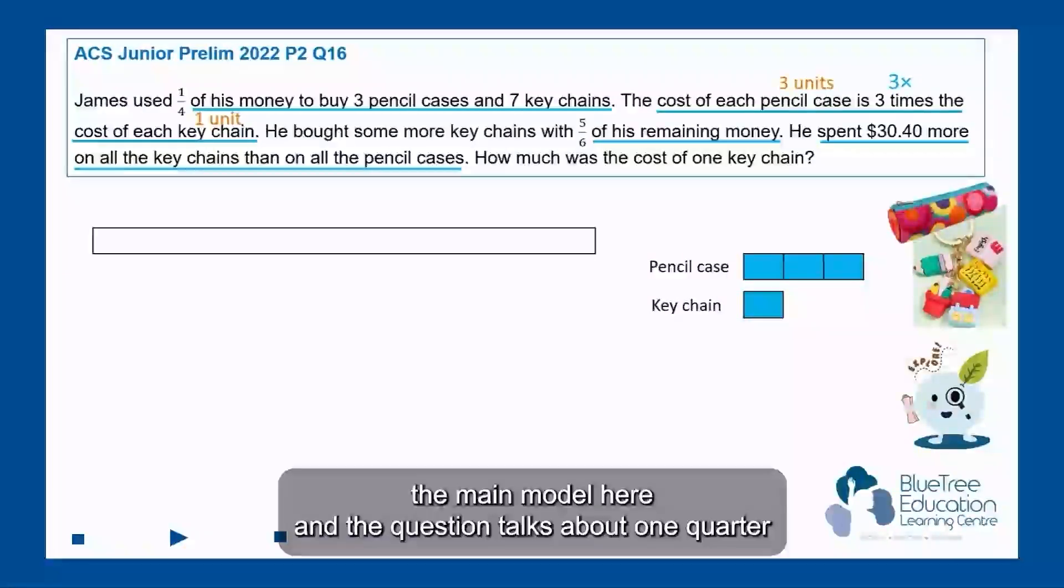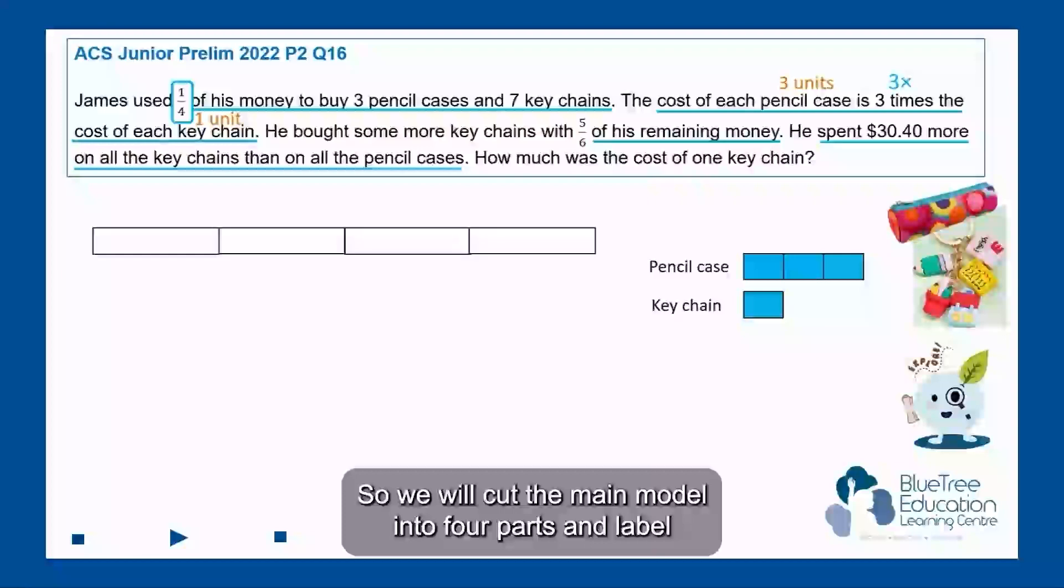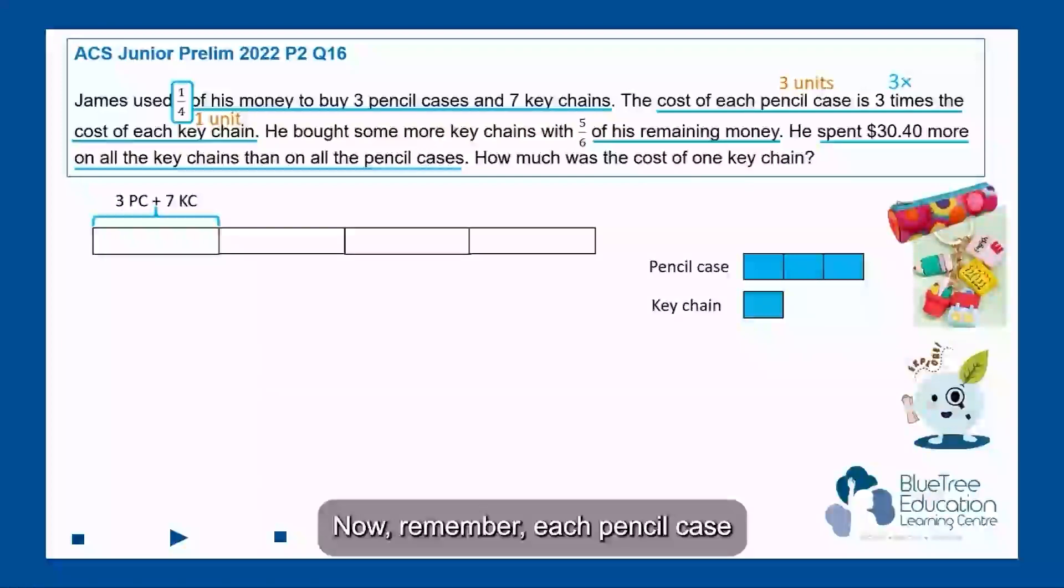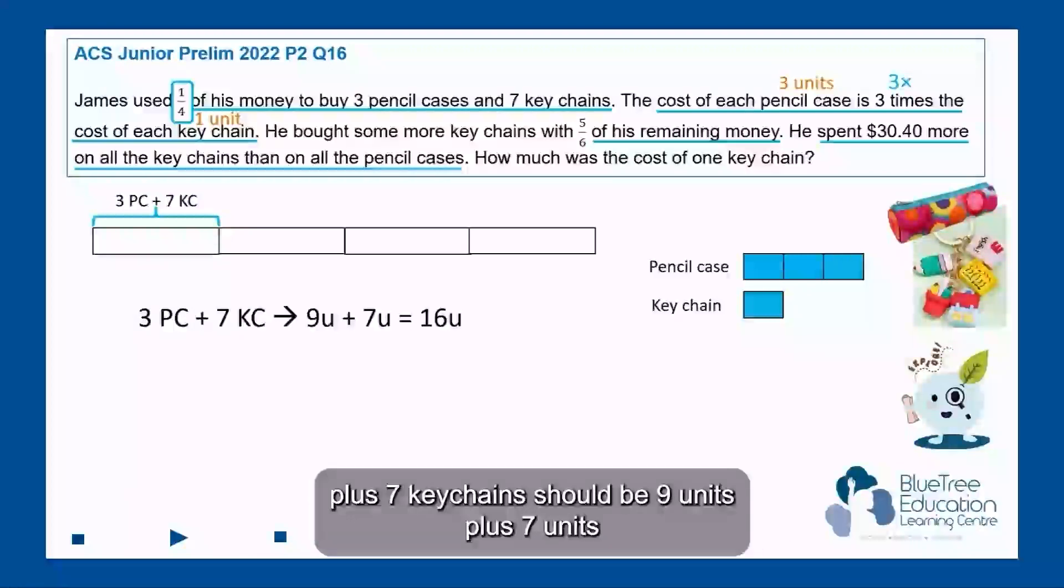Next, let's draw the main model here. The question talks about one quarter that is used to buy three pencil cases and seven keychains. So we will cut the main model into four parts and label the first part as 3 pencil cases plus 7 keychains. Now remember, each pencil case is 3 units and each keychain is 1 unit. So 3 pencil cases will be 9 units and 7 keychains will be 7 units. So we can write down this statement: 3 PC + 7 KC → 9u + 7u = 16u.